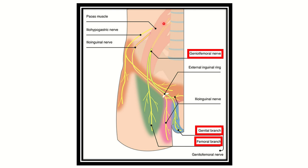The genitofemoral nerve arises from the lumbar plexus with root values L1 and L2. It gives two important branches: the genital branch, which supplies the genital area, and the femoral branch, which supplies the upper part of the thigh.